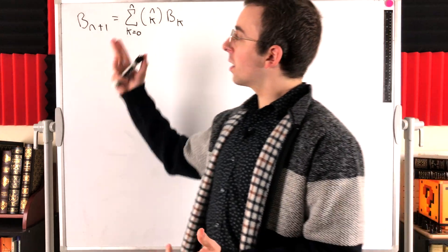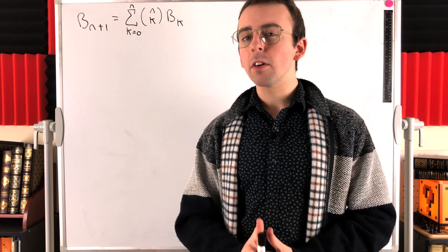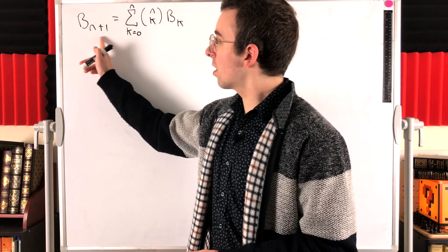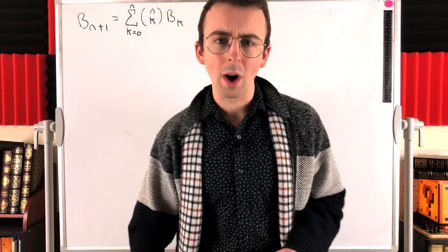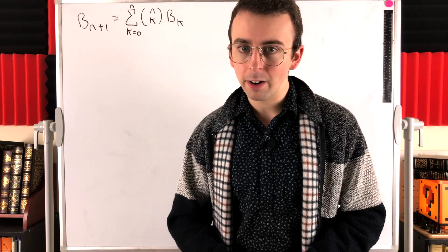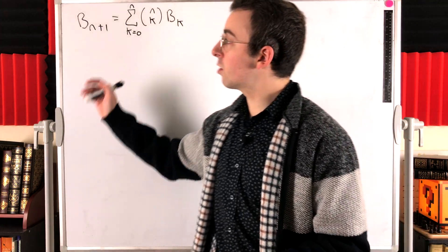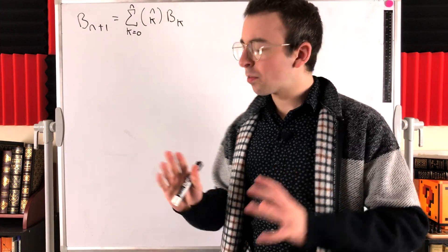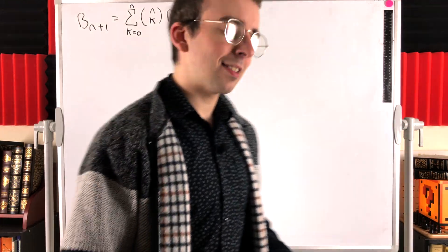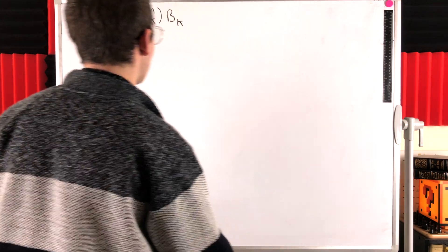One more time: the bell number BN+1 tells us the number of ways we can partition a set of N+1 objects. I'll leave links in the description to previous lessons introducing partitions of sets, introducing bell numbers, and explaining where this recurrence relation comes from without proving it. So if after the proof you're still not quite sure about some of the details, you'll want to check out some of those lessons.